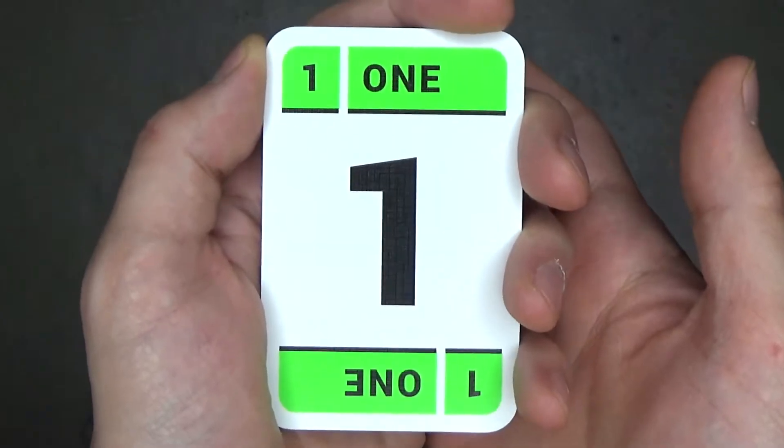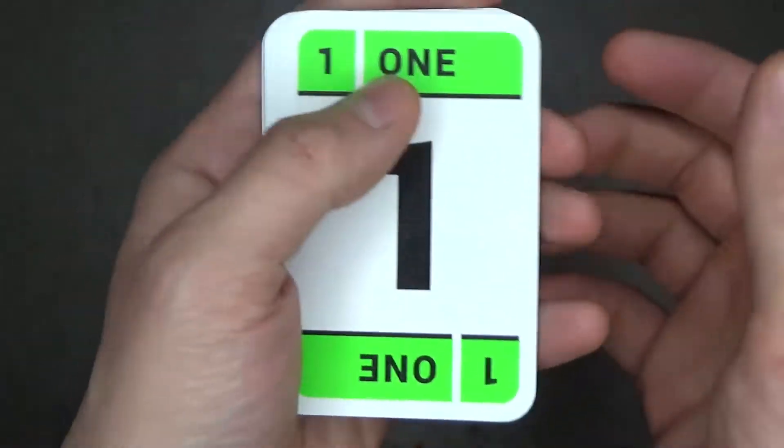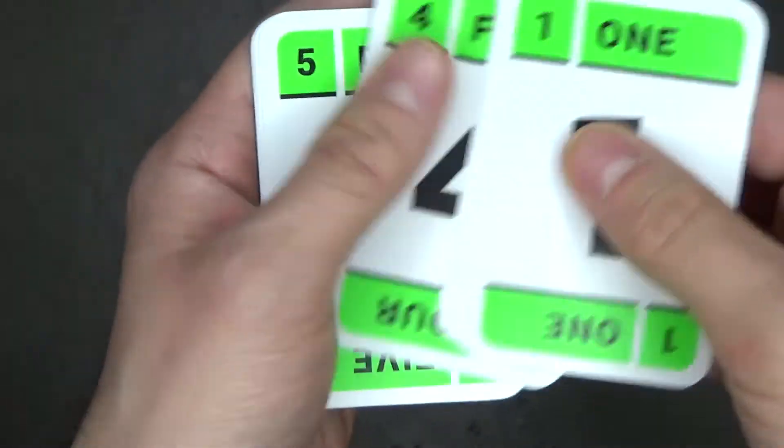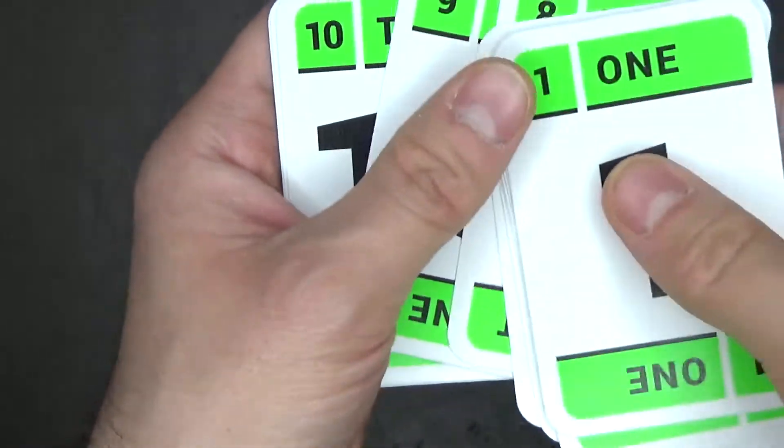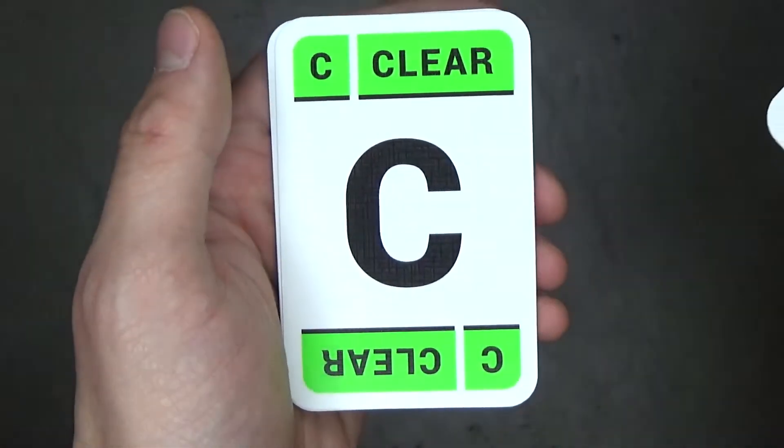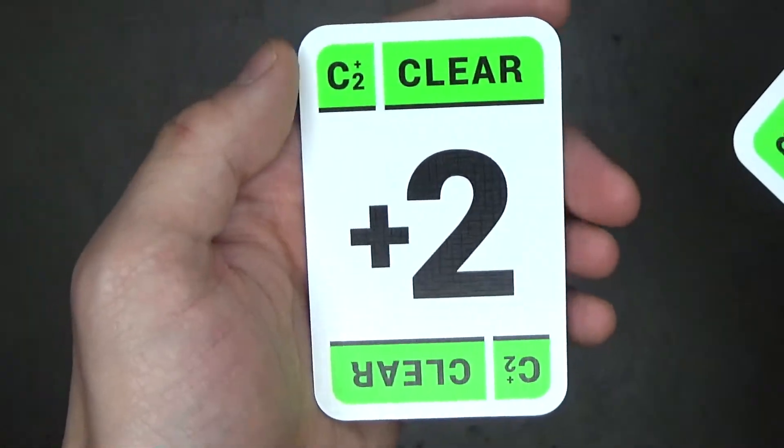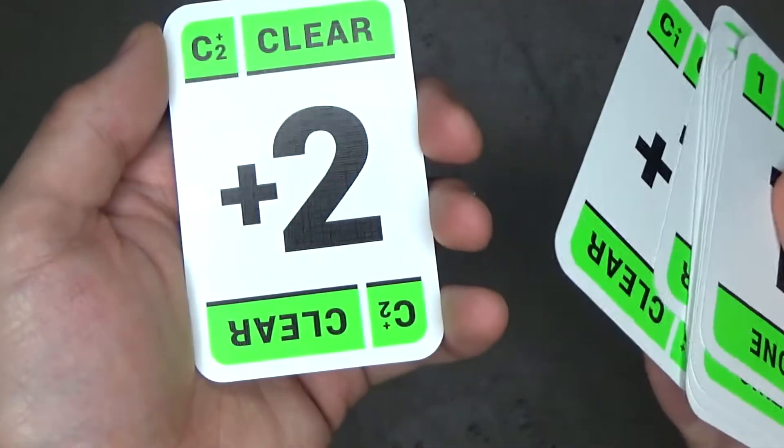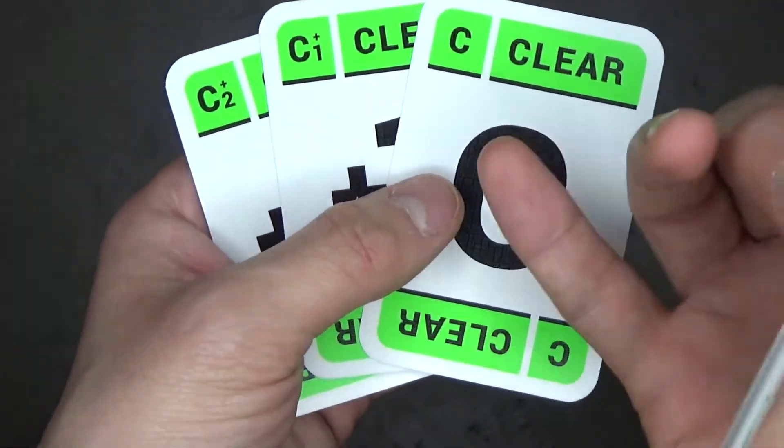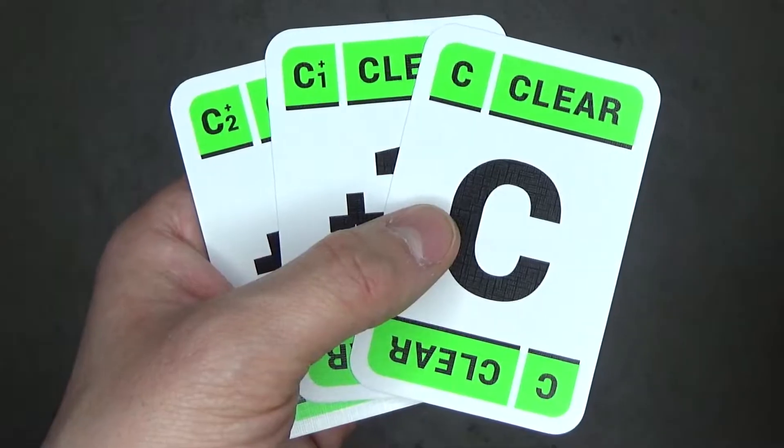These are all very basic cards. You have your numbered cards of 1, 2, 3, 4, 5, 6, 7, 8, 9, and 10. You also have a clear card, a clear plus 1 card, and a clear plus 2 card. That's it. That's all the cards that you need to know. I'll go over the clear cards in just a bit.